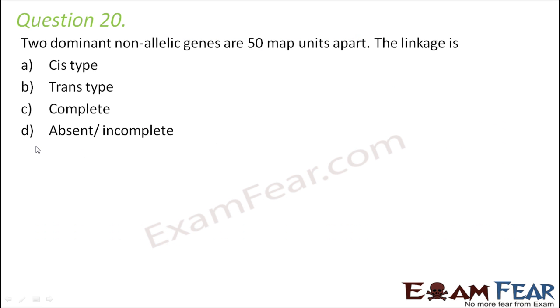Question number 20: Two dominant non-allelic genes are 50 MAP units apart. The options are: the linkage is cis type, trans type, complete, absent, or incomplete.